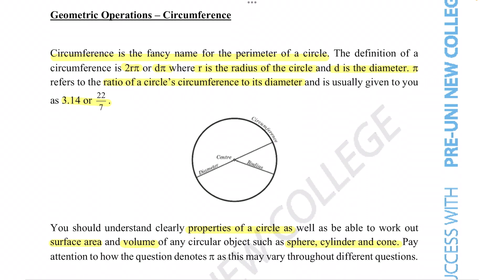Circumference, like we just read about, is basically a fancy name for the perimeter of a circle. So it's essentially this line here.